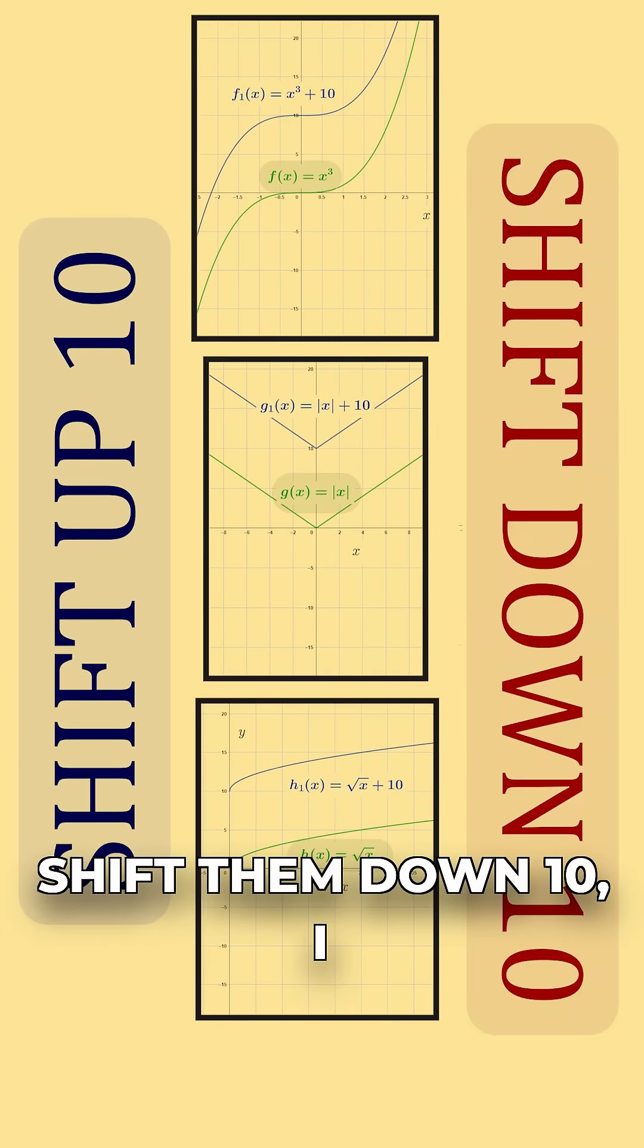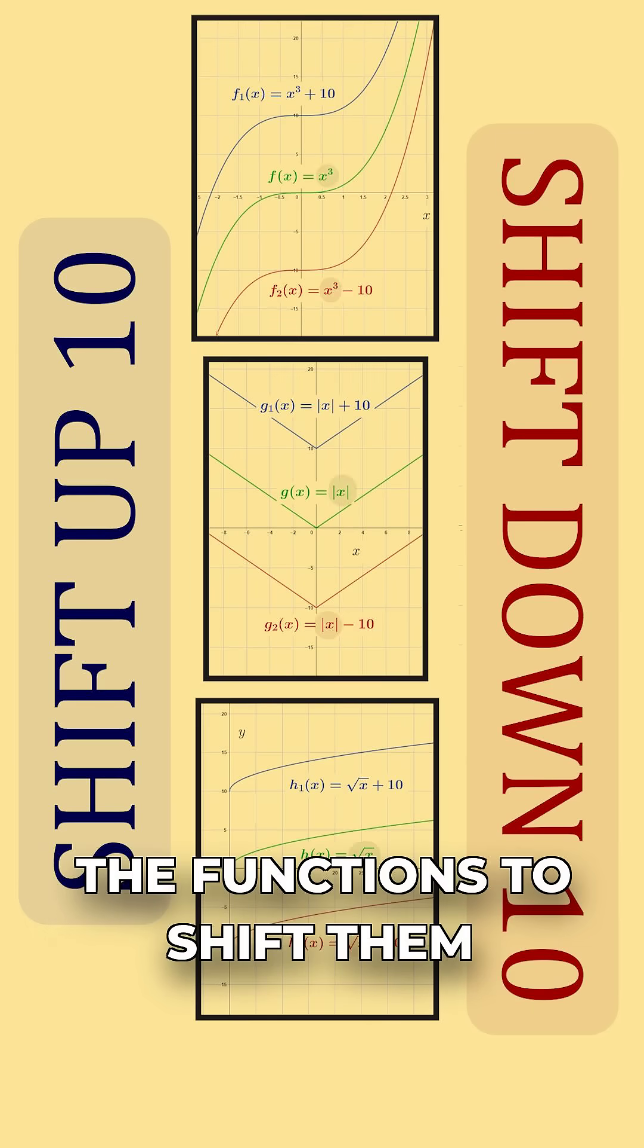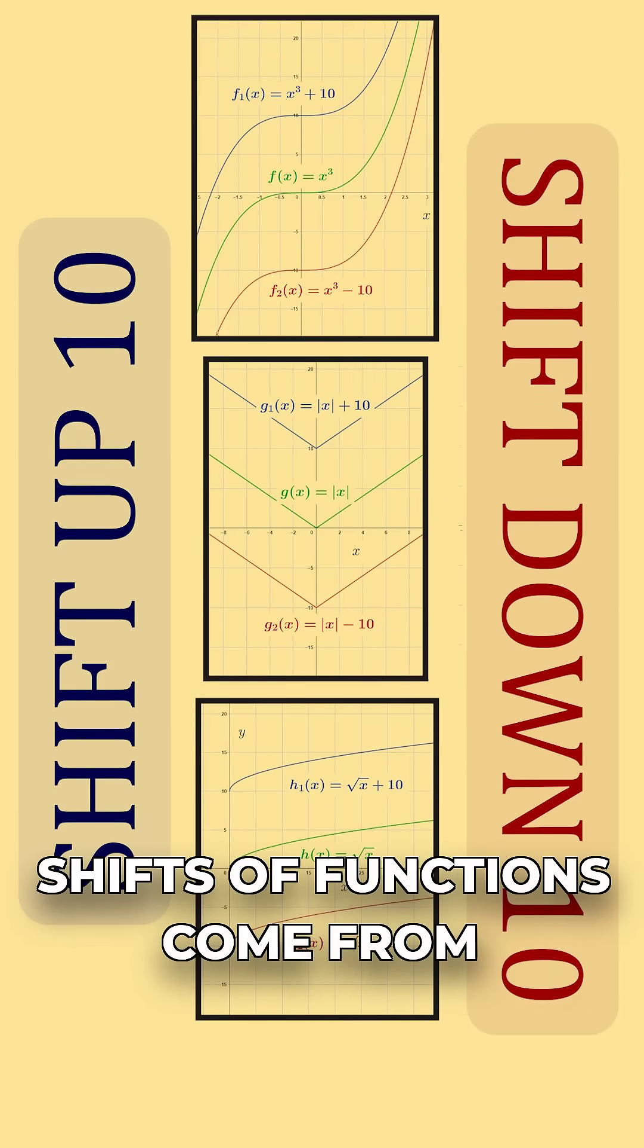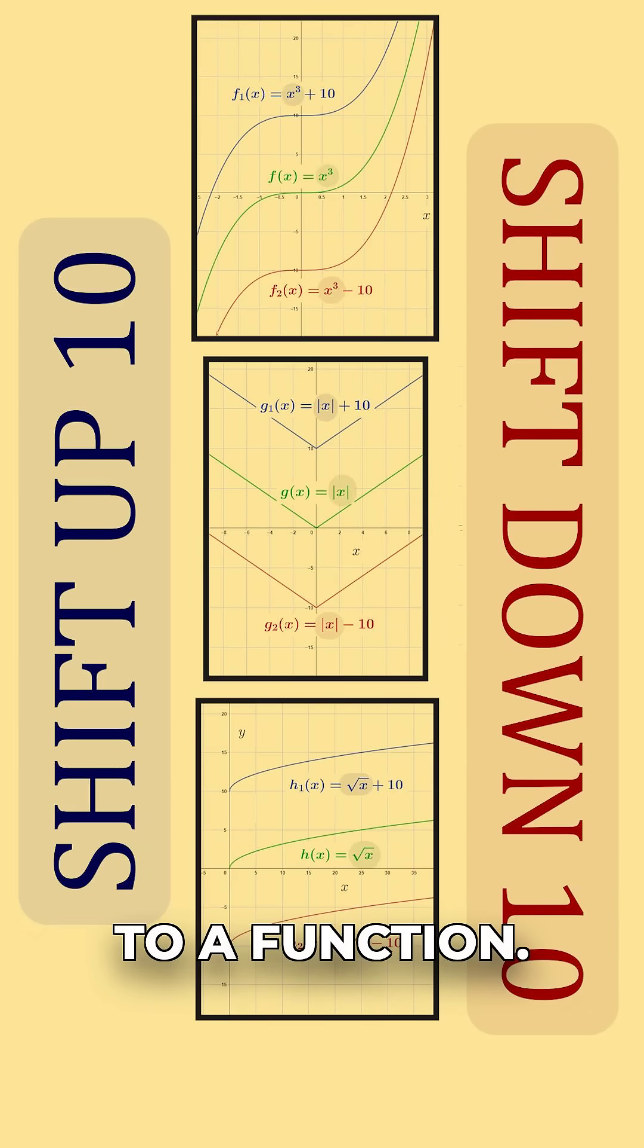If I wanted to shift them down 10, I would subtract 10 from the original functions to shift them vertically down 10. Mainly, vertical shifts of functions come from adding or subtracting a constant to a function.